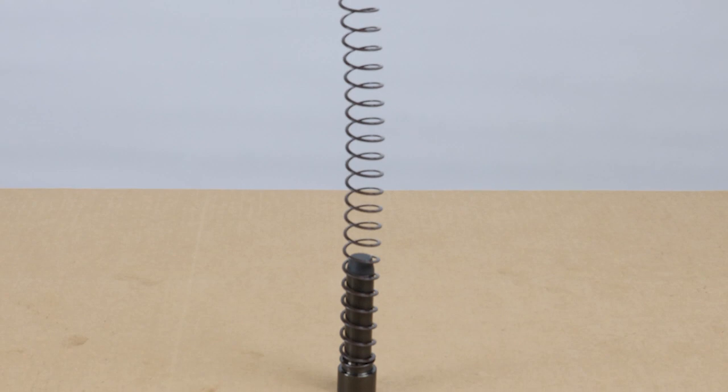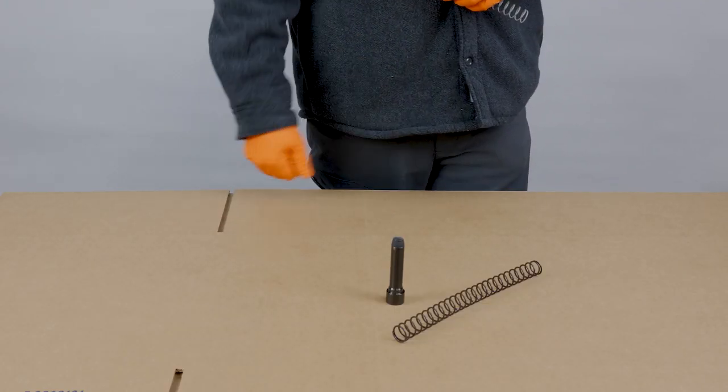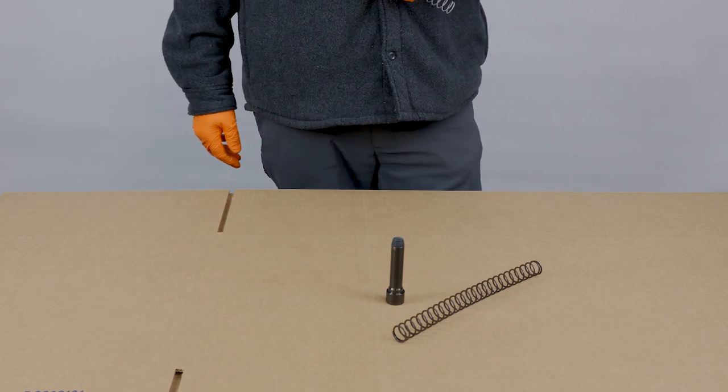This is a flat wire 308 carbine recoil spring with one of our heavy buffers. We found that it really softens the recoil impulse and it's a very cost-effective way to do that.